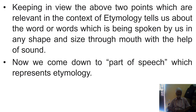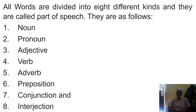Now we come to the parts of speech which represent etymology. In summary, all words are divided into eight different kinds and they are called parts of speech. They are as follows: noun, pronoun, adjective, verb, adverb, preposition, conjunction, and interjection.